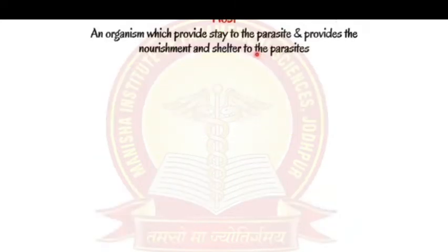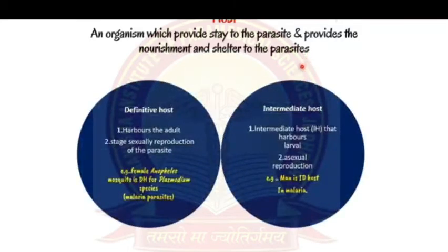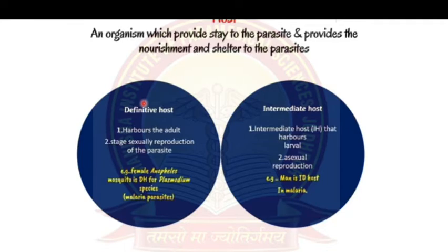A host is an organism that provides shelter and nourishment to the parasite. Hosts are of two types: definitive and intermediate. In the definitive host, we see the adult stage and sexual reproduction of the parasite. In most cases, the definitive host is a human being, but exceptions exist — for example, the female Anopheles mosquito is the definitive host for malaria.